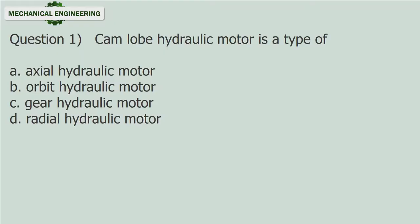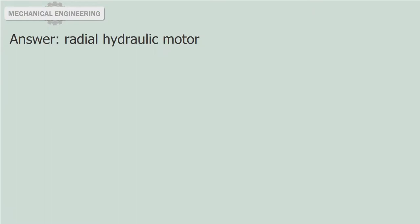Hydraulics and Pneumatics Test Number 5. Question 1: Cam lobe hydraulic motor is a type of: A) axial hydraulic motor, B) orbit hydraulic motor, C) gear hydraulic motor, D) radial hydraulic motor. Answer: Radial hydraulic motor.